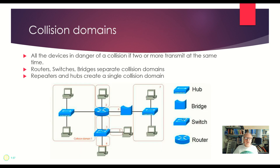Collision domains. Collision domains are all the devices in danger of a collision if two or more transmit at the same time. They're separated by routers, switches, and bridges. So anytime there's a router, a switch, or a bridge — now note that routers, repeaters, and hubs do not create separate collision domains.